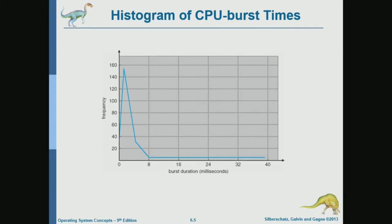The histogram shows the horizontal axis as the CPU burst duration length, and the vertical axis as how frequently this occurs. We see that the most frequent CPU burst length is about two milliseconds, while CPU bursts longer than eight milliseconds are rare. It's rare to have a burst longer than eight milliseconds.